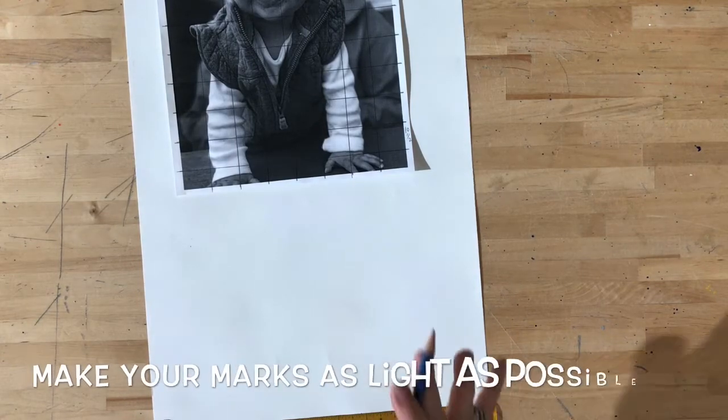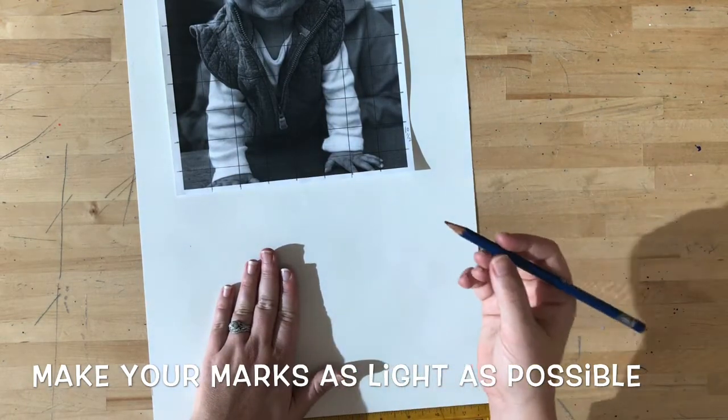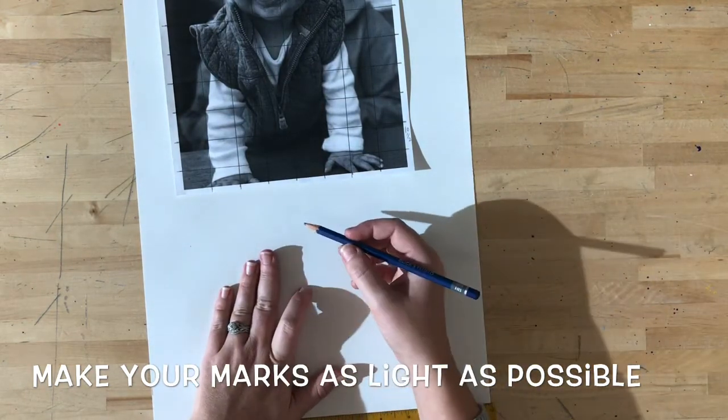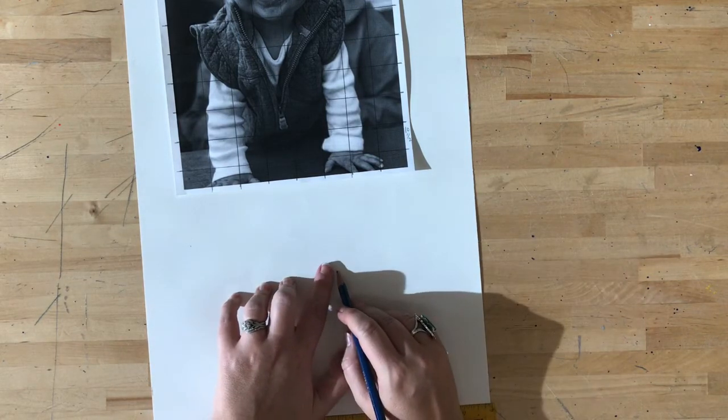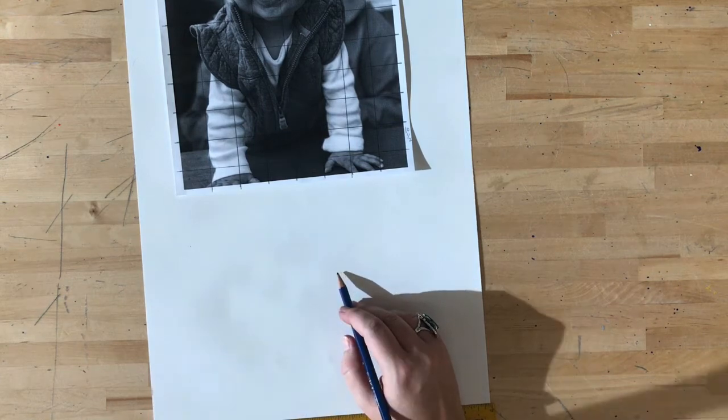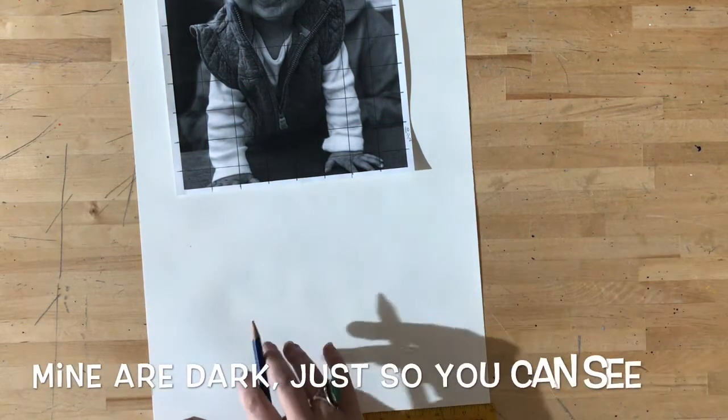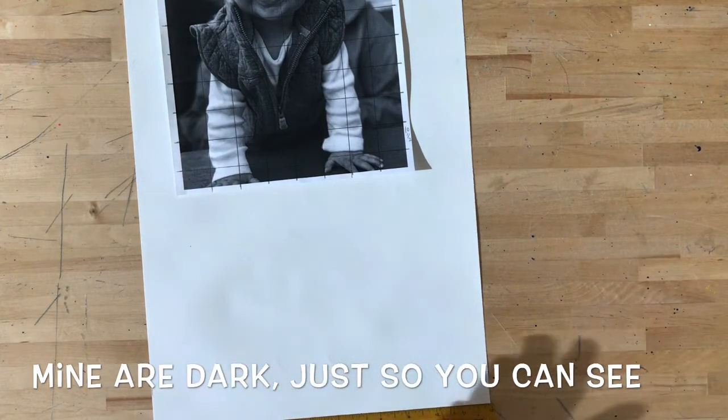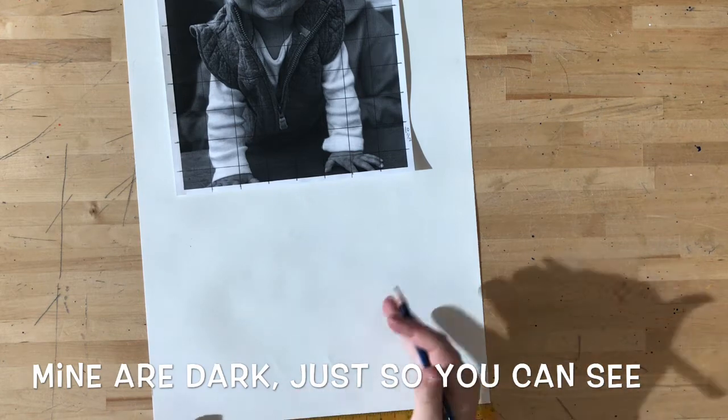Now, as a disclaimer, if you're doing this on your own, I want you to make your boxes or your lines as light as you possibly can. So even like that light, you probably can't even see that in the video. For the purposes of this video, I'm going to be making my marks dark so that you're able to see them. If I do them really light, it's not going to show up in the video. But when you're doing this on your own, make the marks light.